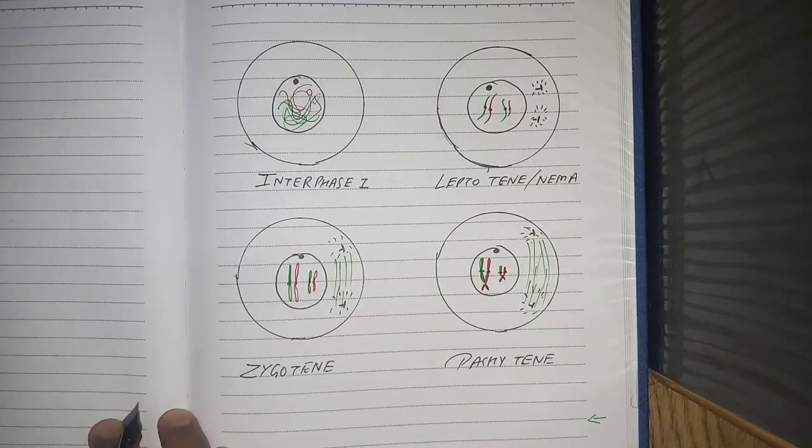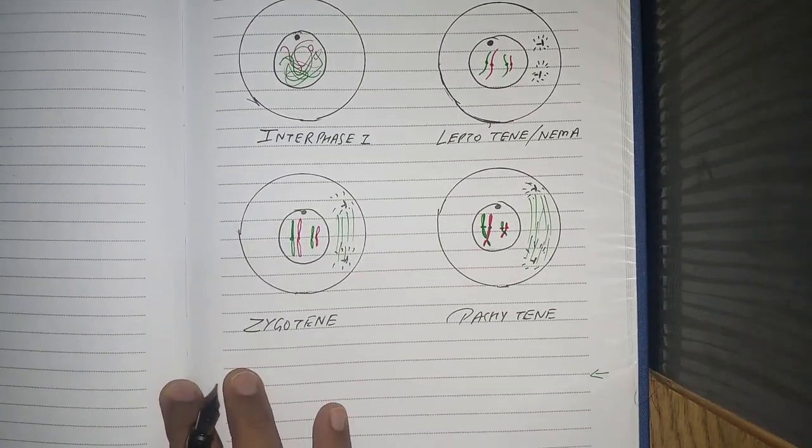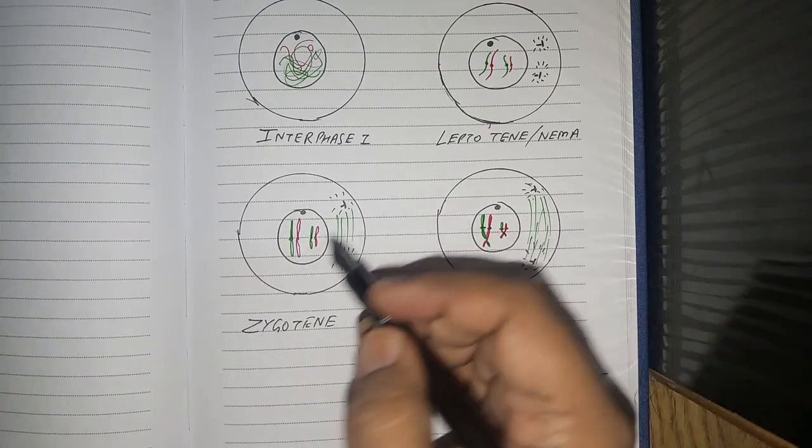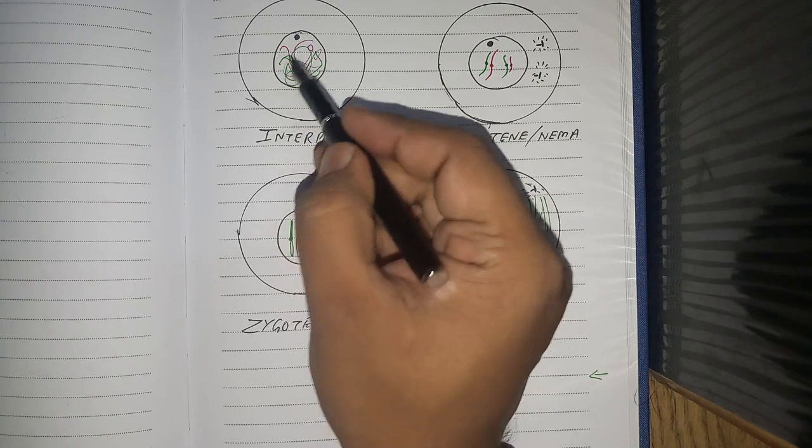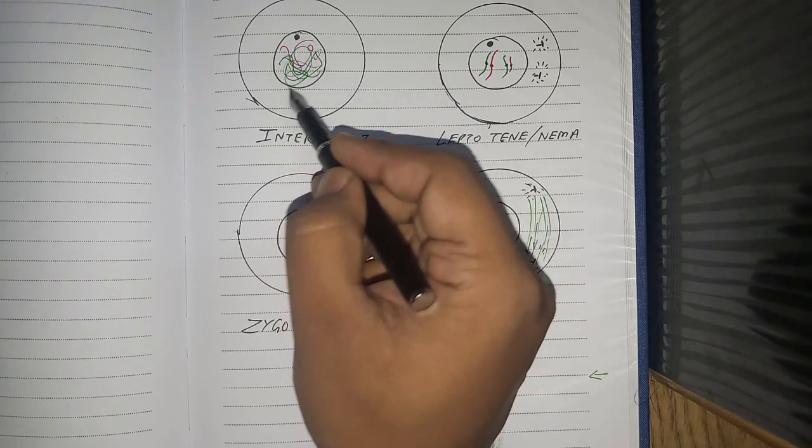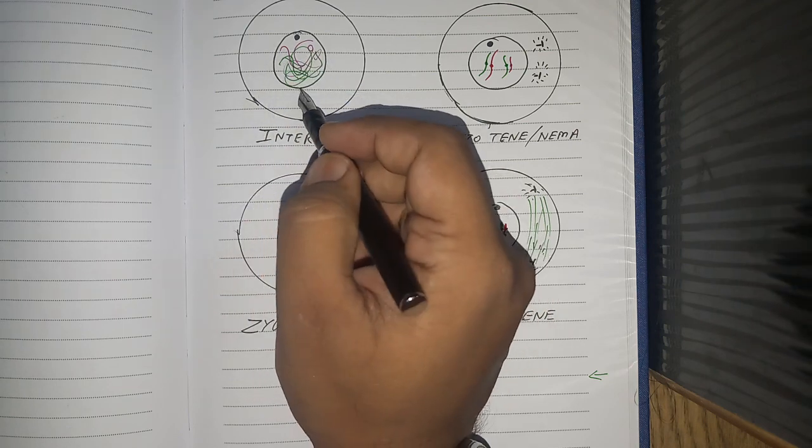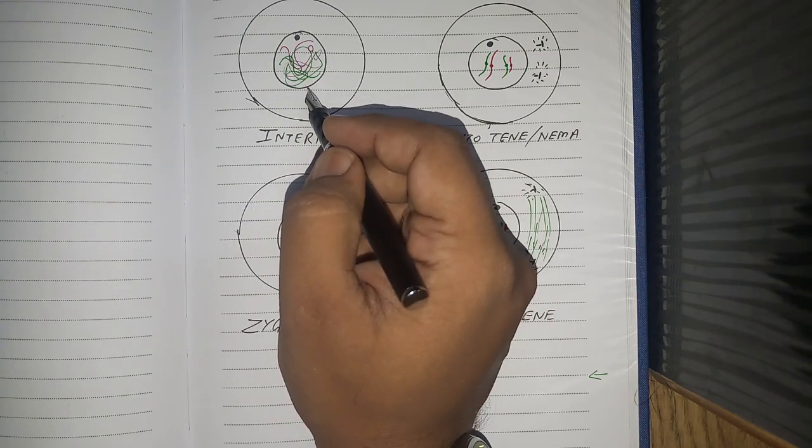I have already drawn the interphase. Interphase was preparatory phase. In that preparatory phase, the chromosome number had already doubled. These are the chromatic fibers, they are already doubled.